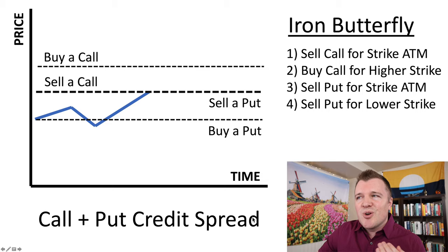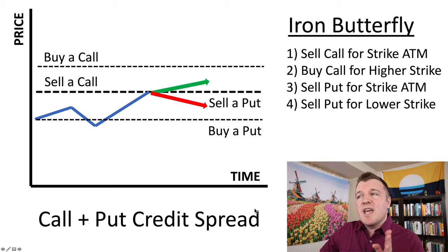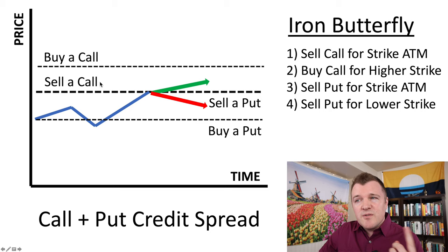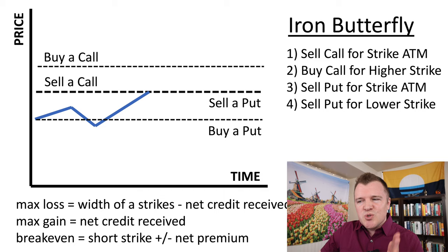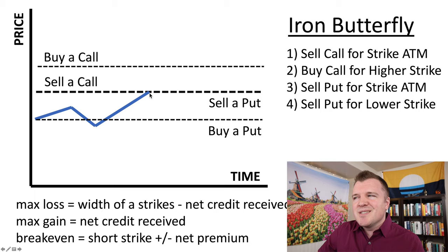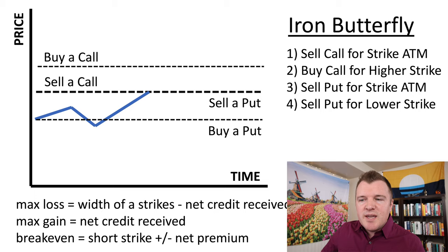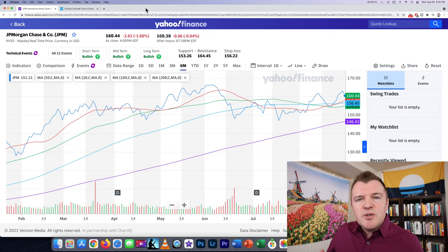You've now created a range between the call that you bought and the put that you bought. To make money on an iron butterfly you need the share price by expiration to stay within a certain range. There are break-even lines on either side — the net credit you're receiving from selling a call and selling a put, minus what you pay back to buy a call and buy a put. The width of the strikes minus the net credit received is your maximum loss. Your max gain is just the net credit received. To calculate break-evens it's the short strike plus or minus the net premium for all four contracts.